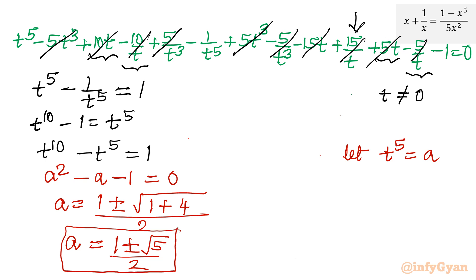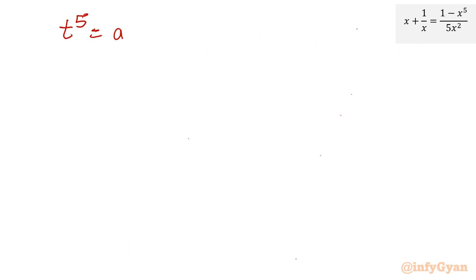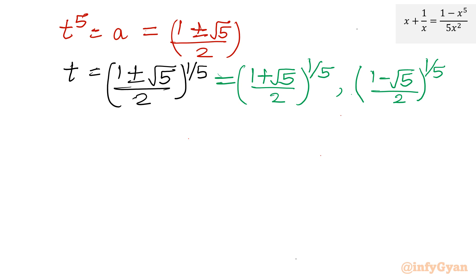Now we have found the value of a, which means t is also known. Since t⁵ equals a equals (1 ± √5)/2, raising both sides to the power 1/5 gives t equal to (1 ± √5)/2 to the power 1/5. Taking the plus and minus signs separately: t₁ = ((1 + √5)/2)^(1/5) and t₂ = ((1 − √5)/2)^(1/5).